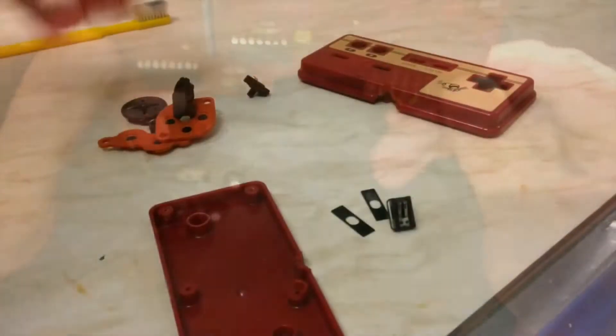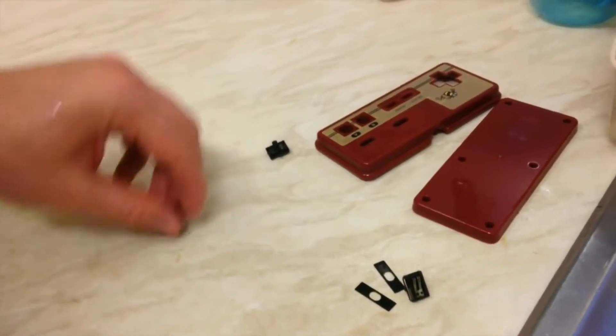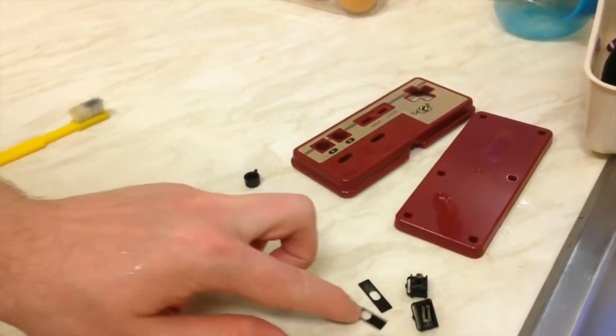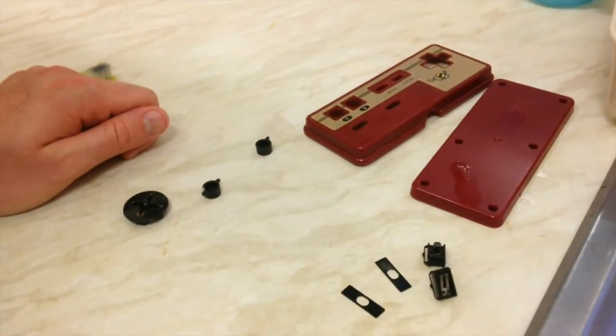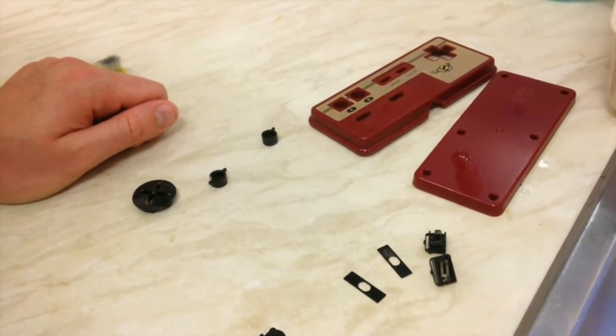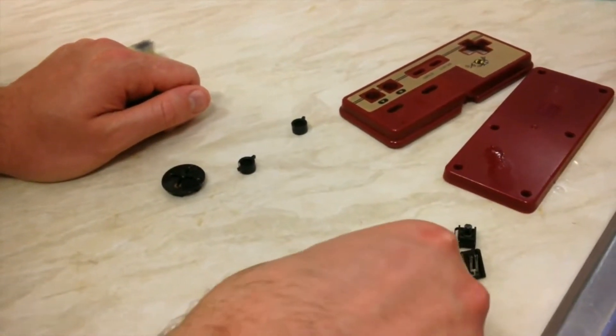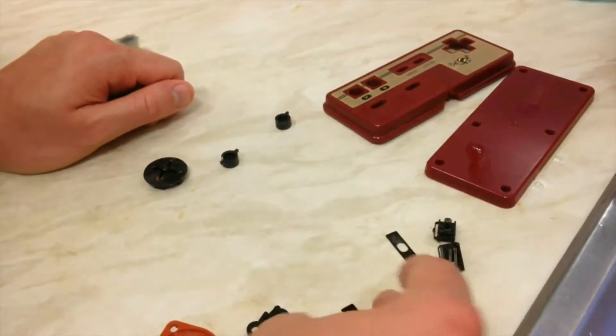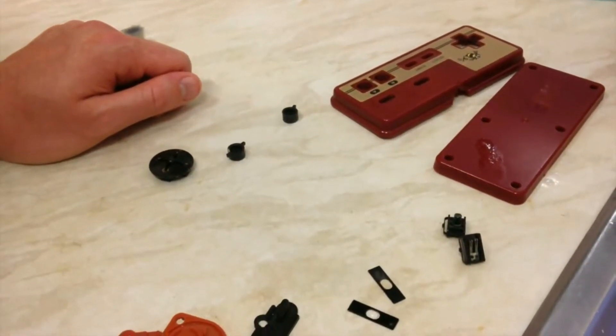Okay, so here we are at the sink. We've got our front and back case, our rubber parts, our buttons A and B, directional pad, our turbo switches and these little panels here. One bit of advice I'll give about sticking everything in the sink: make sure you remember how many bits went in. If you pull the plug and something small like this is still in there, it'll just go straight down the drain.